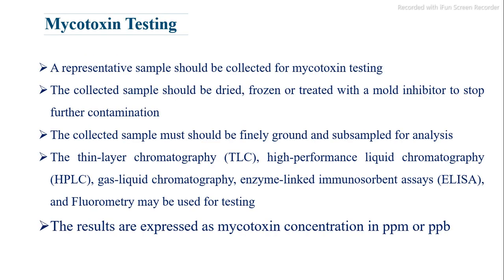For mycotoxin testing, a representative sample should be collected, then dried, frozen, or treated with a mold inhibitor to stop further contamination. The collected sample should be finely ground and subsampled for analysis. Methods including thin layer chromatography (TLC), high-performance liquid chromatography (HPLC), gas-liquid chromatography, enzyme-linked immunosorbent assay (ELISA), and fluorometry may be used. Results are expressed as mycotoxin concentration in PPM or PPB.